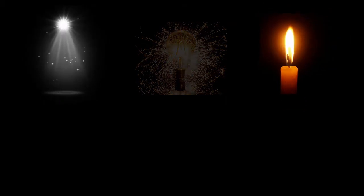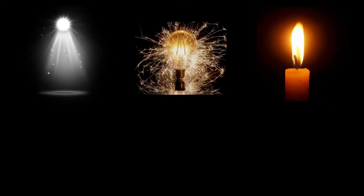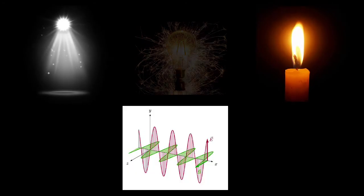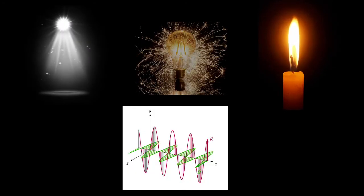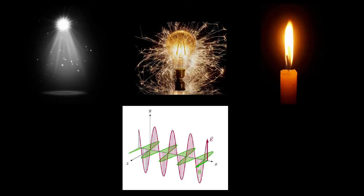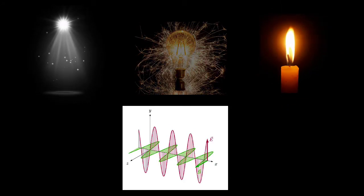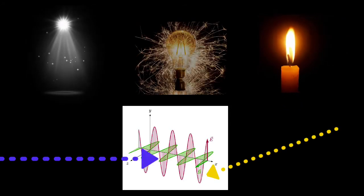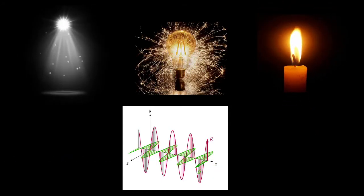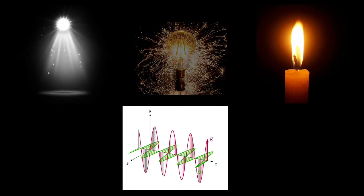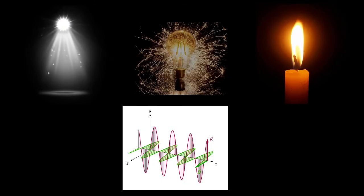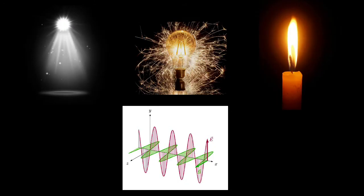Light produced by sun, lamp and candle is unpolarized light. So to understand what is unpolarized light and polarized light, we should know what is light. Light is an electromagnetic wave. So this electromagnetic wave is produced by electromagnetic vibrations. So whenever these vibrations are happening, they occur in different directions, in various directions. For understanding purpose, let us consider that light is vibrating in vertical and horizontal directions.